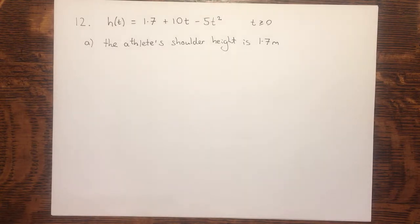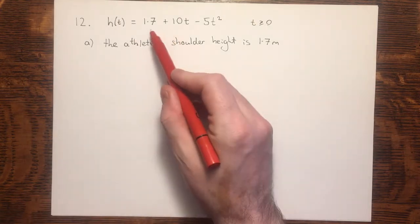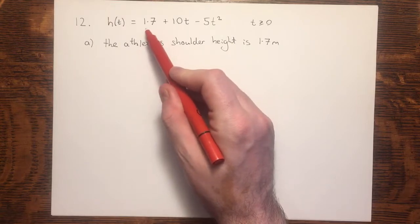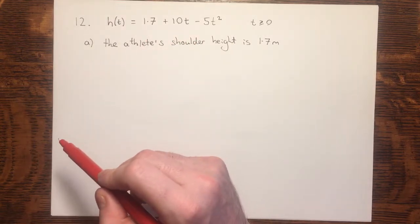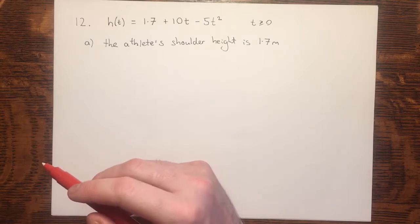The athlete's shoulder height is 1.7 meters. That answers part A. There's not really a lot of maths to that, so much as thinking about the context of the question. I suppose we have to understand about the constant being the value when t equals 0, and apply that to the situation.